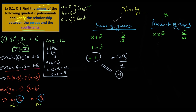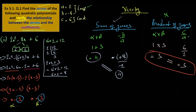Alpha is 1, beta is 3. Product: 1 times 3 equals 3. And c by a: 6 by 2 equals 3. So the product of zeros is also verified. Both the sum of zeros and product of zeros match the coefficients.